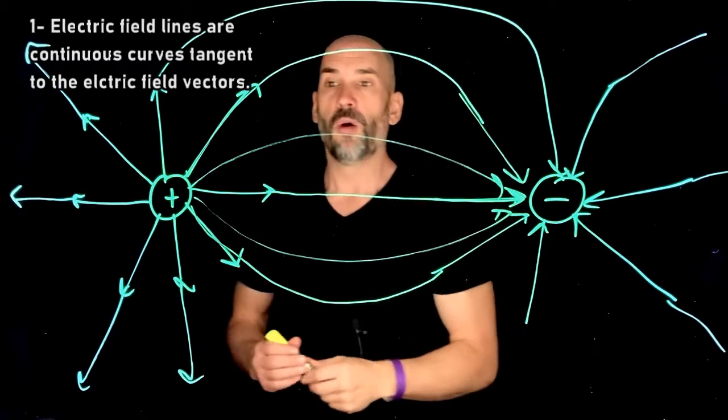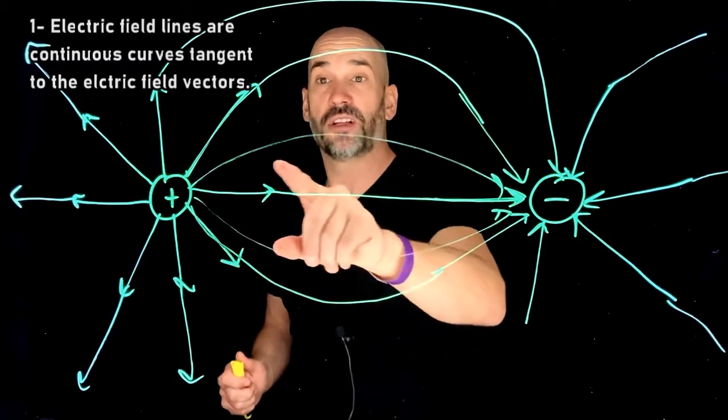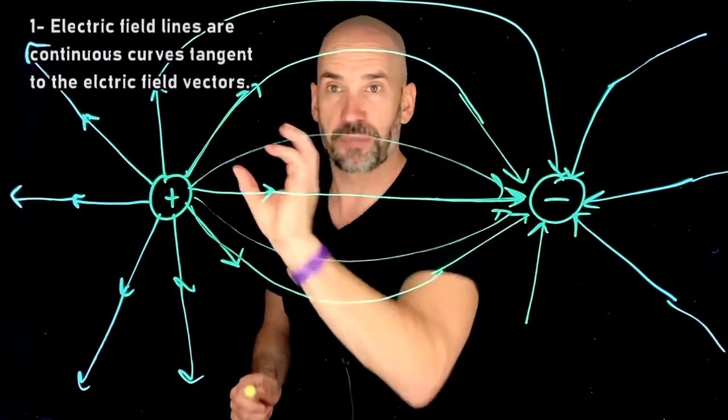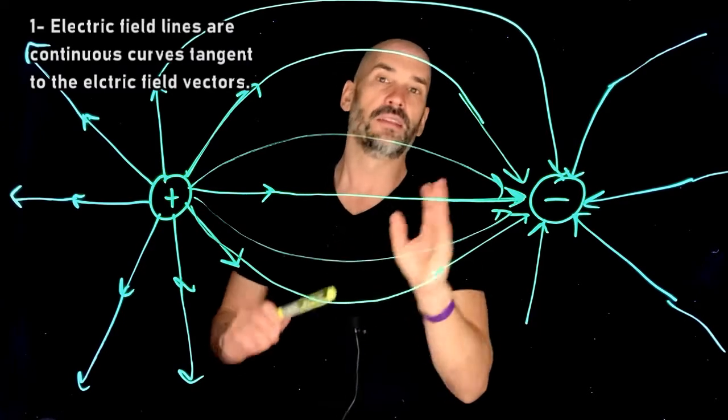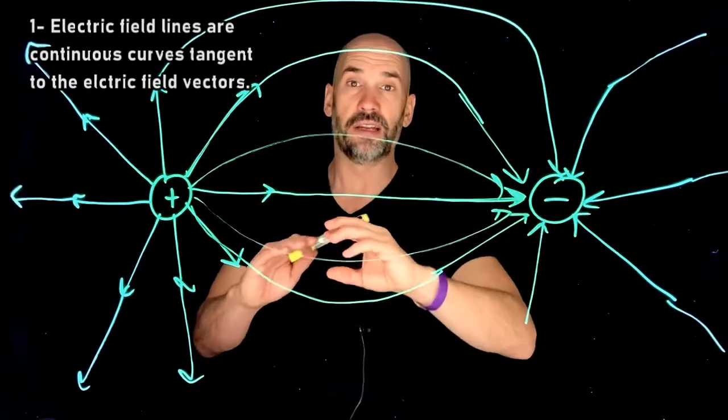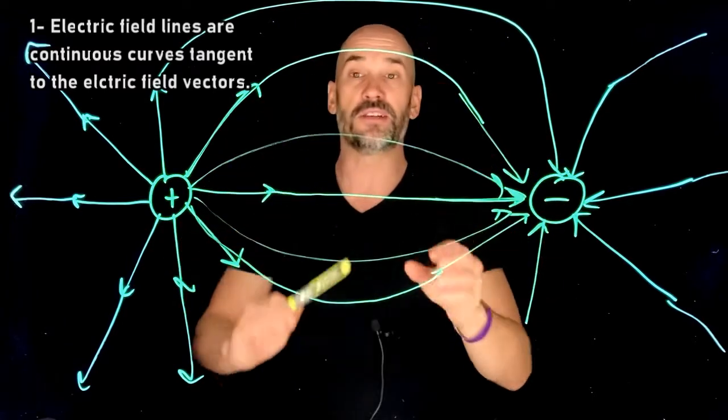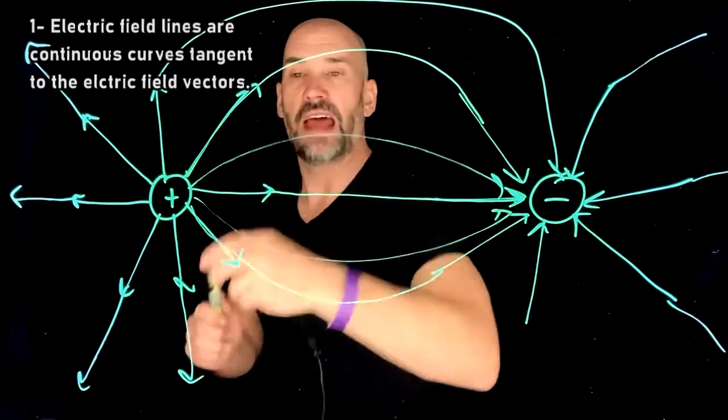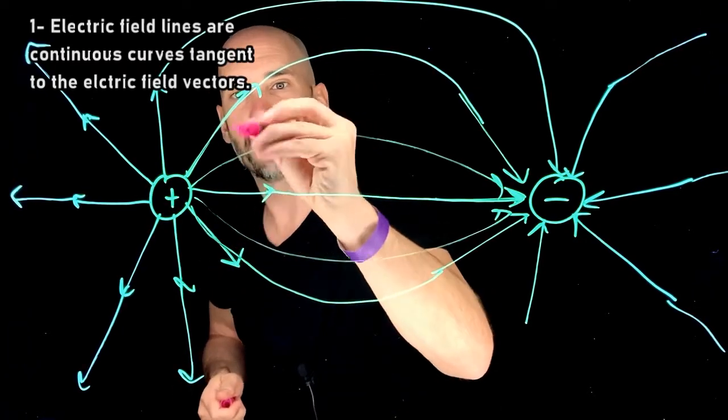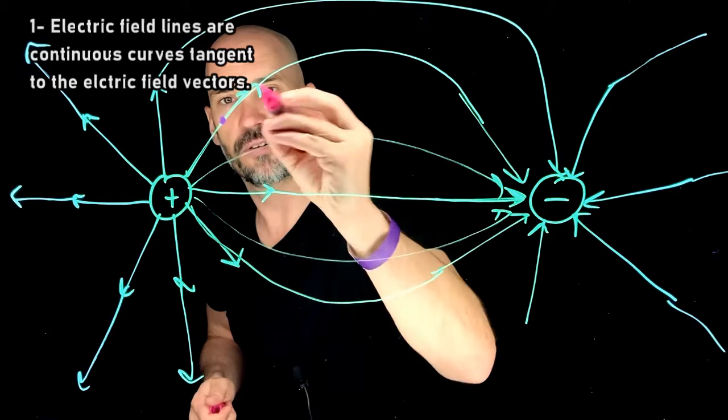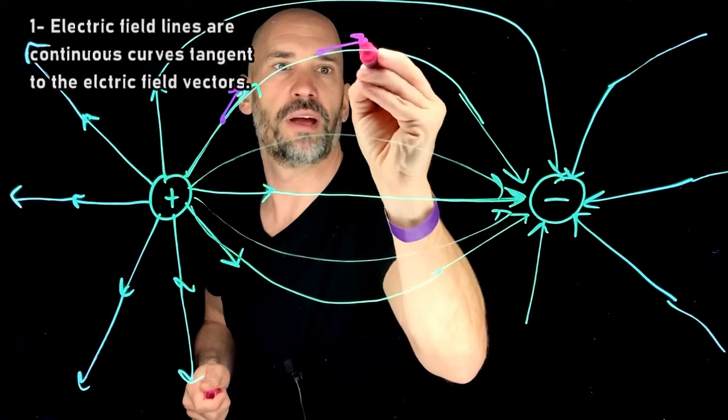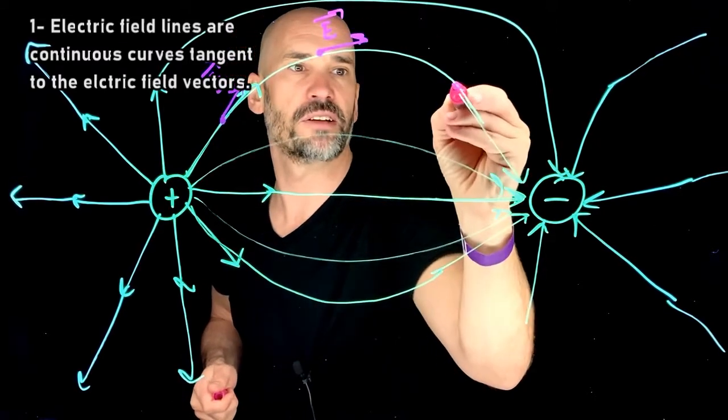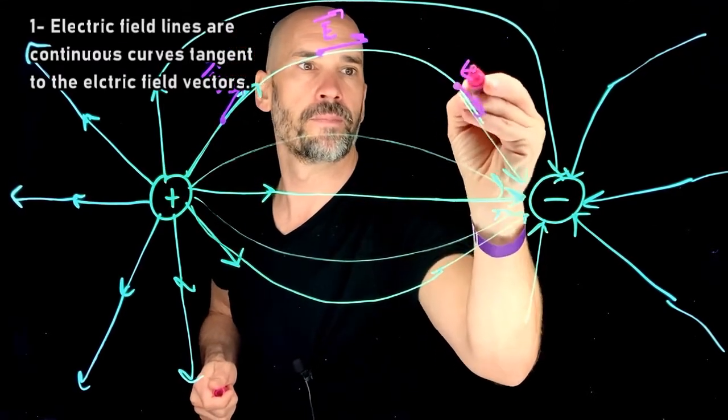electric field lines are continuous curves that are tangent to electric field vectors. Okay, so what do I mean by that? I mean, electric field lines are always smooth and continuous. You're never going to just see one stop suddenly, unless it's ending on another particle. But in free space, you never see one just stop suddenly. And every little point along the way here, so the electric field vector here at this point, the direction electric field would be pointing this way, electric field here would be pointing this way, so the E vector, the electric field vector, is always tangent to the electric field lines.